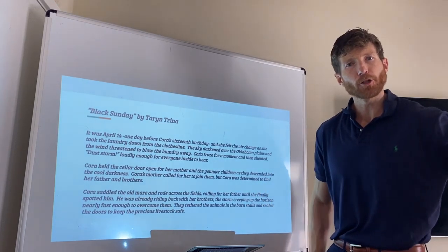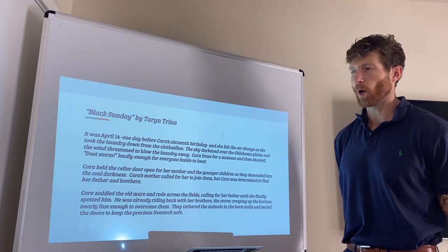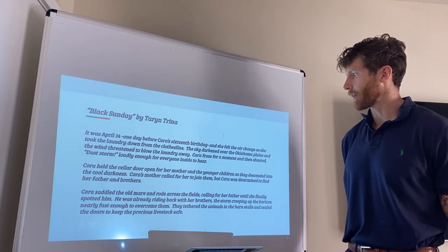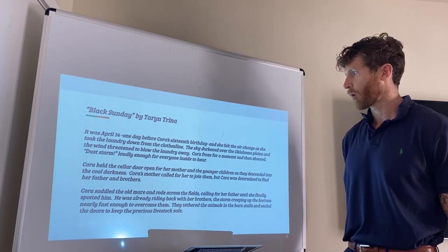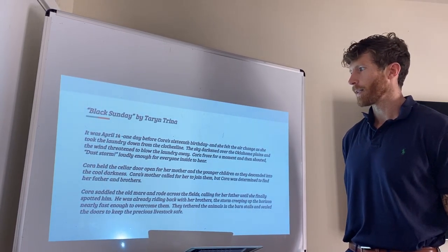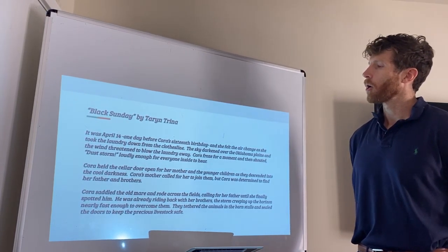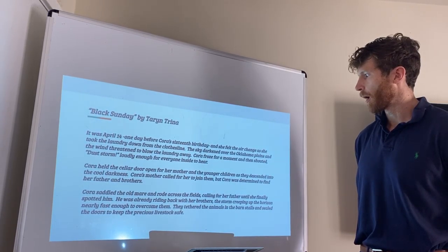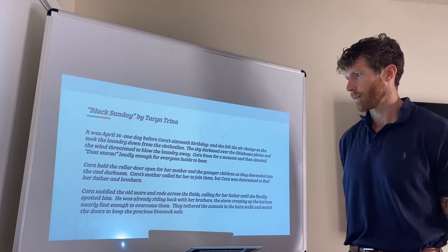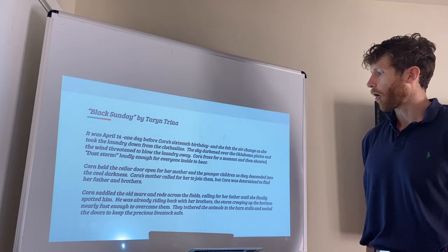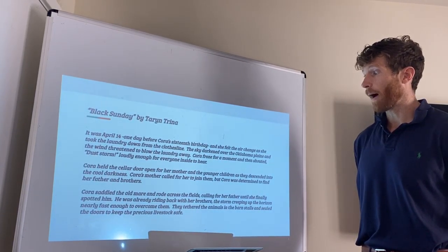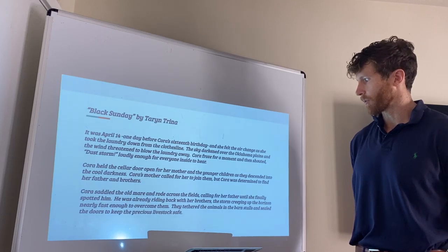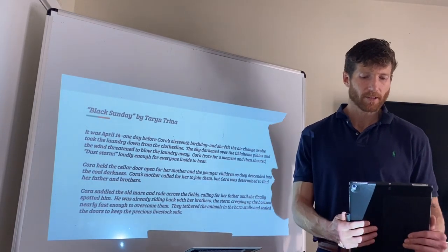Black Sunday by Taryn Trina. It was April 14th, one day before Cora's 16th birthday, and she felt the air change as she took the laundry down from the clothesline. The sky darkened over the Oklahoma plains, and the wind threatened to blow the laundry away. Cora froze for a moment and then shouted 'Dust Storm' loudly enough for everyone inside to hear. Cora held the cellar door open for her mother and the younger children as they descended into the cool darkness. Cora's mother called for her to join them, but Cora was determined to find her father and brothers. Cora saddled the old mare and rode across the fields, calling for her father until she finally spotted him. He was already riding back with her brothers, the storm creeping up the horizon nearly fast enough to overcome them. They tethered the animals in the barn stalls and sealed the doors to keep the precious livestock safe.